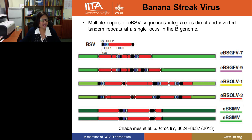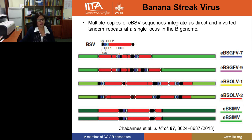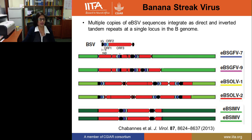Once it is integrated into the banana genome, there are multiple copies of the viral genome integrated as indirect tandem repeats at a single locus in the B genome of banana. Banana has the A genome and the B genome, and this virus only integrates into the B genome. The approximately 7 KB virus becomes about 22 to 23 KB once it's integrated into the banana genome.